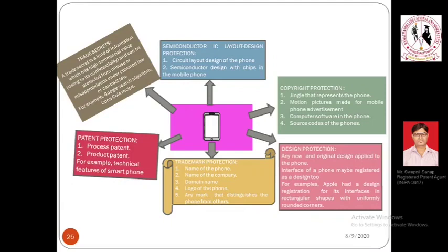The coding behind the operating system of a mobile phone — Android, Mac OS, Windows — is not disclosed to anybody. We just get a simple executable file to install, but we are not aware of what coding is running behind it. None of us, regardless of how expensive the phone — a one-lakh-rupee Apple phone or a 5,000-rupee Samsung phone — know the specific coding of the OS; we only know its name and version. This coding is called a trade secret.